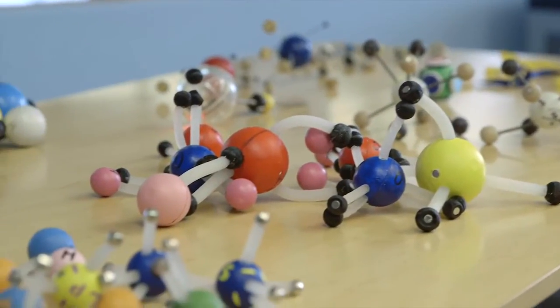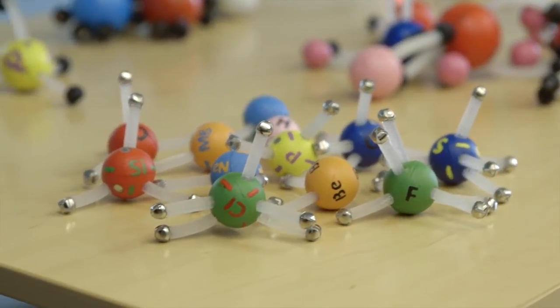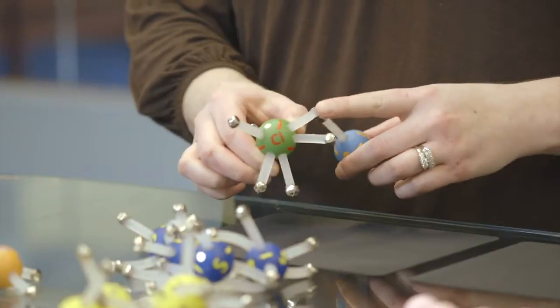In phase one, we experimented with many ways of physically modeling molecular bonding before arriving at our current design. The atom models connect together to form molecules. Each atom has a colorful nucleus, with valence electrons suspended by flexible silicone arms.